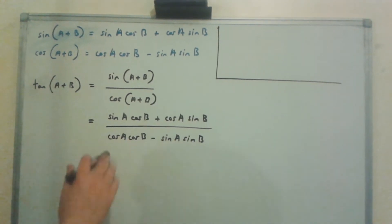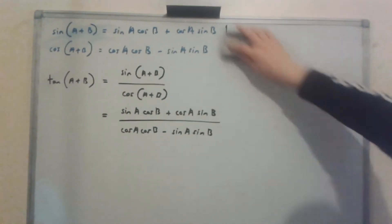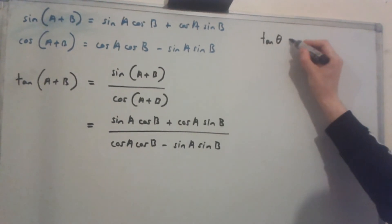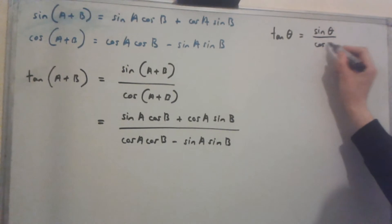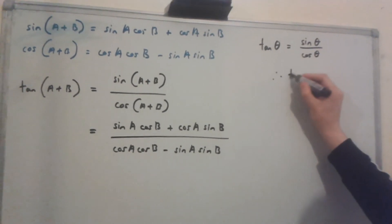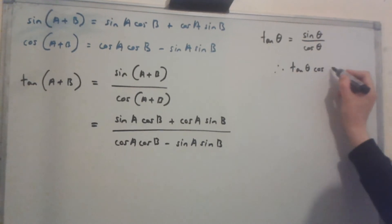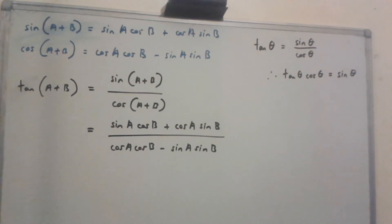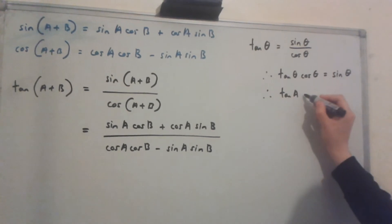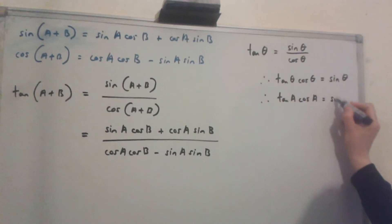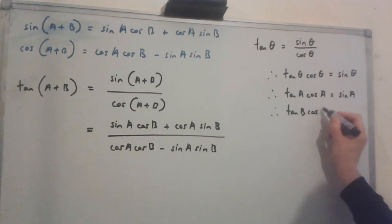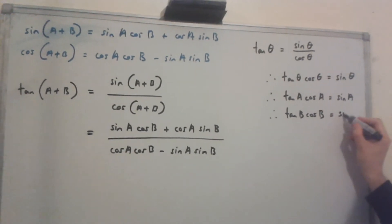Now, in order to simplify this further, we have to know a few extra rules. We need to know that tan θ is equal to sin θ over cos θ. Therefore, tan θ·cos θ is equal to sin θ. So, tan a·cos a is equal to sin a, and tan b·cos b is equal to sin b.